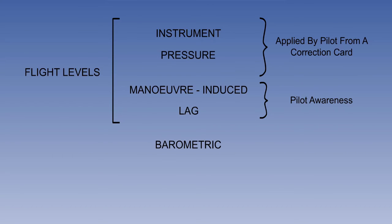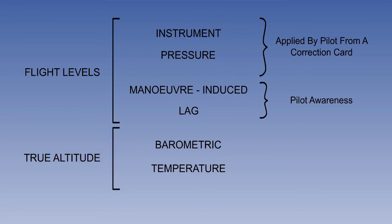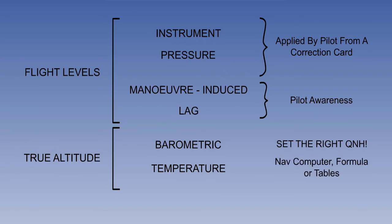The next two errors are barometric error and temperature error, applicable if we wish to obtain true altitude from our altimeter. To avoid barometric error, set the right QNH and keep it up to date. If temperature errors are significant enough to correct, this can be done by using a navigation computer, the formula, or tables. This completes the summary of errors which are inherent and are part of the normal operation of the altimeter when it is serviceable. However, there are also failures of the static system to consider, which lead to an unserviceable instrument.